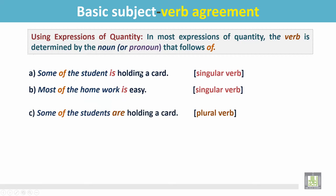'Some of the students are holding a card.' Here, 'students' is a plural noun that follows 'of,' and due to this plural number, the verb is plural: 'are.'